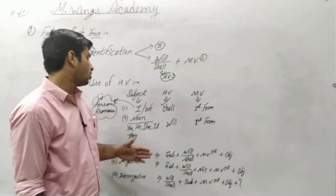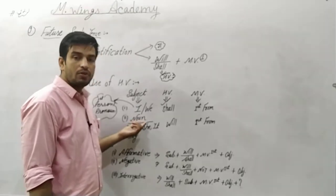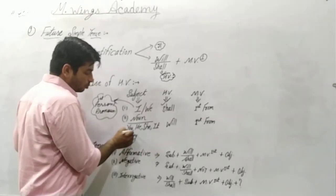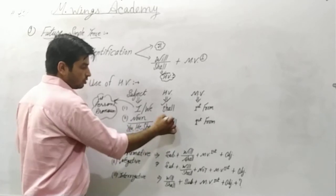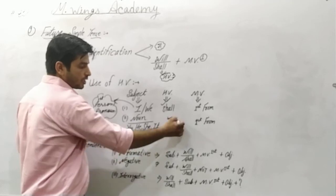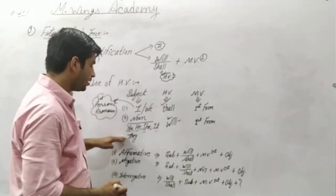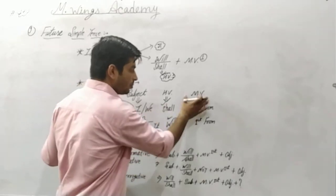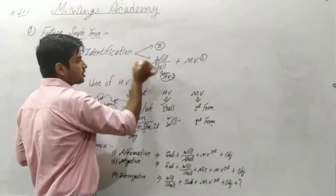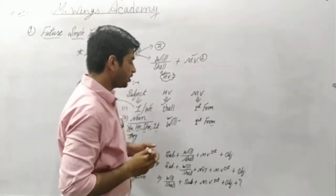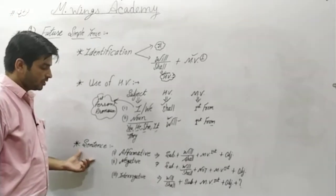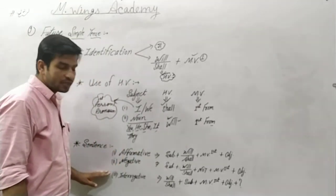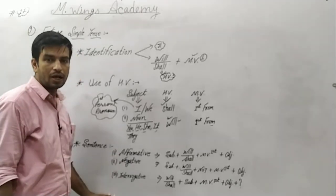If the subject is not first person, it will be a noun or other pronoun. If the pronoun is 'you', use 'will'. If it is 'he', 'she', 'it', or 'they', also use 'will'. For nouns as subjects, also use 'will'. In each video on this topic we discuss three types of sentences: affirmative, negative, and interrogative.